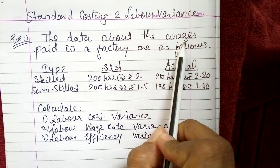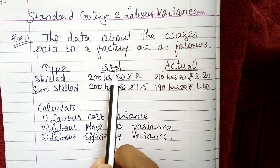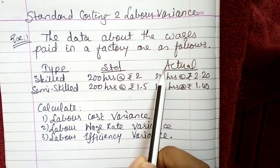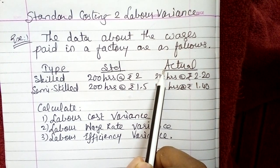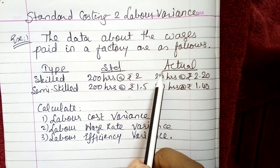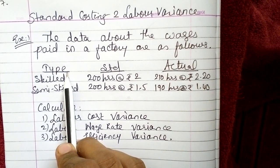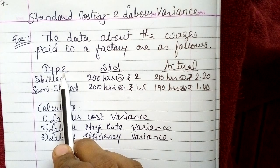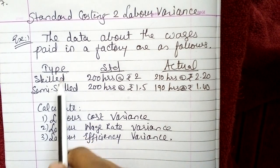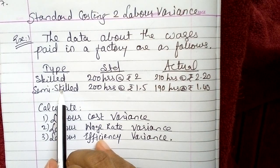The data about the wages paid in a factory are as follows — type, standard and actual. Every now and then we need to compare this with the chapter of material variance; the format of the question would be the same. But with minor variations in the terms. In the material chapter we had the words material A and B, but here, as it is labor variances, the type of laborers are given — skilled and semi-skilled. Otherwise the calculation will remain the same.